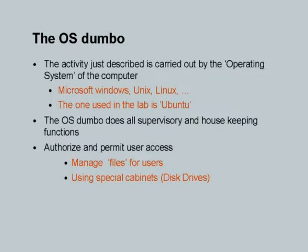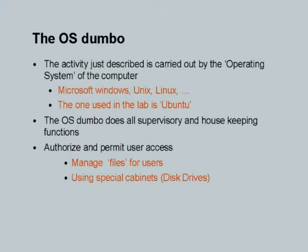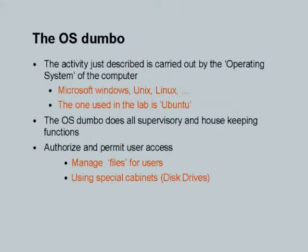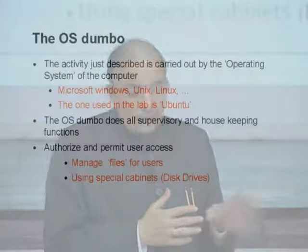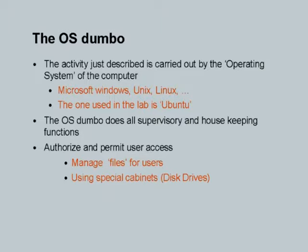The activity which we just described is not carried out by our C++ Dumbo. This activity is carried out by another Dumbo who is actually the main Dumbo. We will call him the OS Dumbo or operating system Dumbo. We will abstract it as a Dumbo, saying that there is a thing called operating system. Some names you would be familiar with, for example, Microsoft Windows, Unix, Linux. The specific version of Linux we use in our labs is called Ubuntu. The OS Dumbo essentially does all the supervisory work, all the housekeeping functions for the computer.